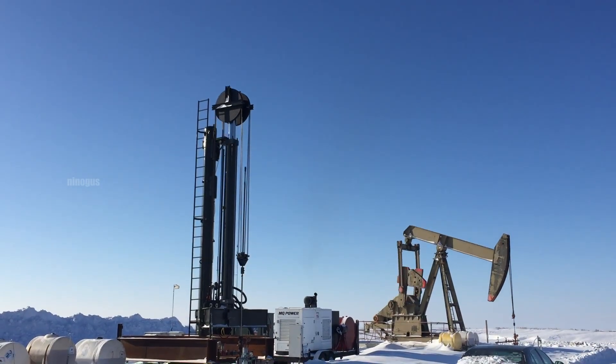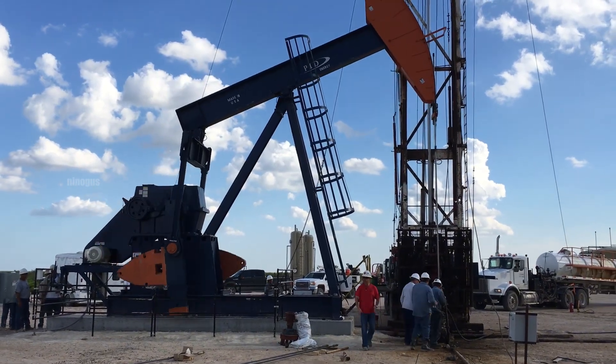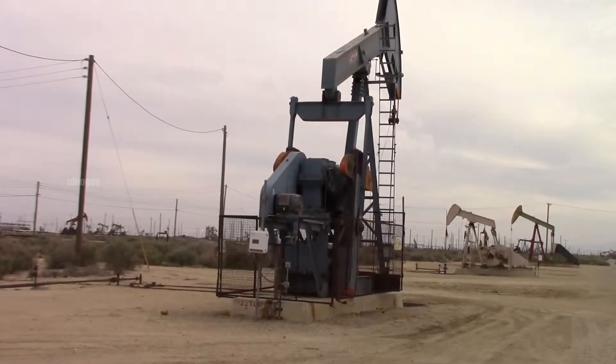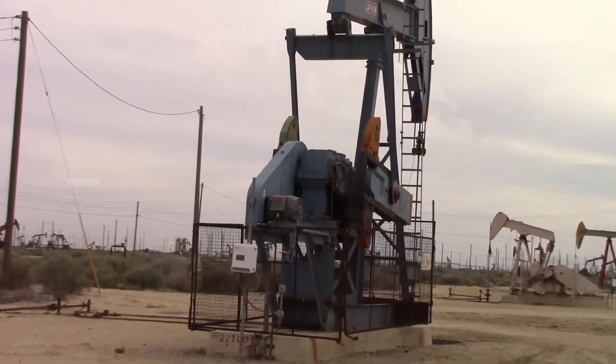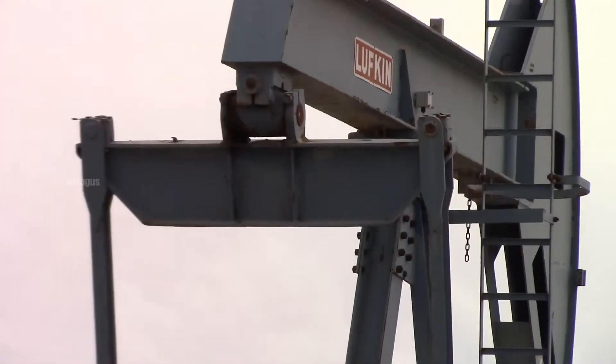At first glance, the pump jack seems like a simple device. It only moves slowly up and down, as if nothing special is happening. However, it is this very movement that makes it possible for underground crude oil to be lifted continuously to the surface.